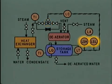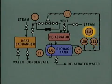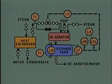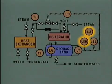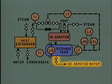These symbols represent level switches that are connected by electrical signal lines to a remote level alarm. If the level in the storage tank gets too high or too low, one of the level switches activates the alarm. The deaerated water leaves the storage tank through this line.